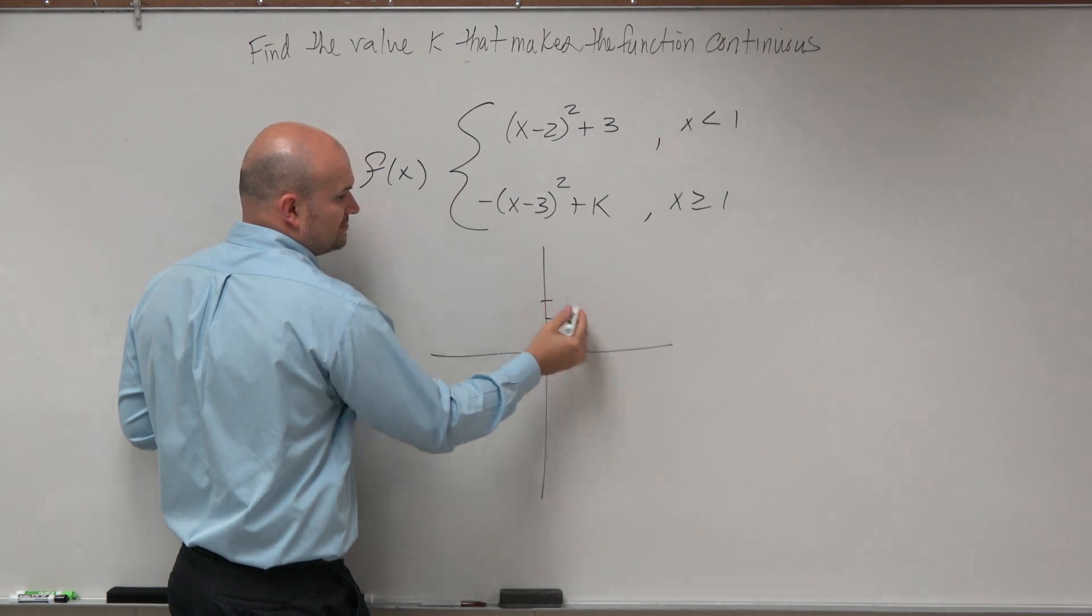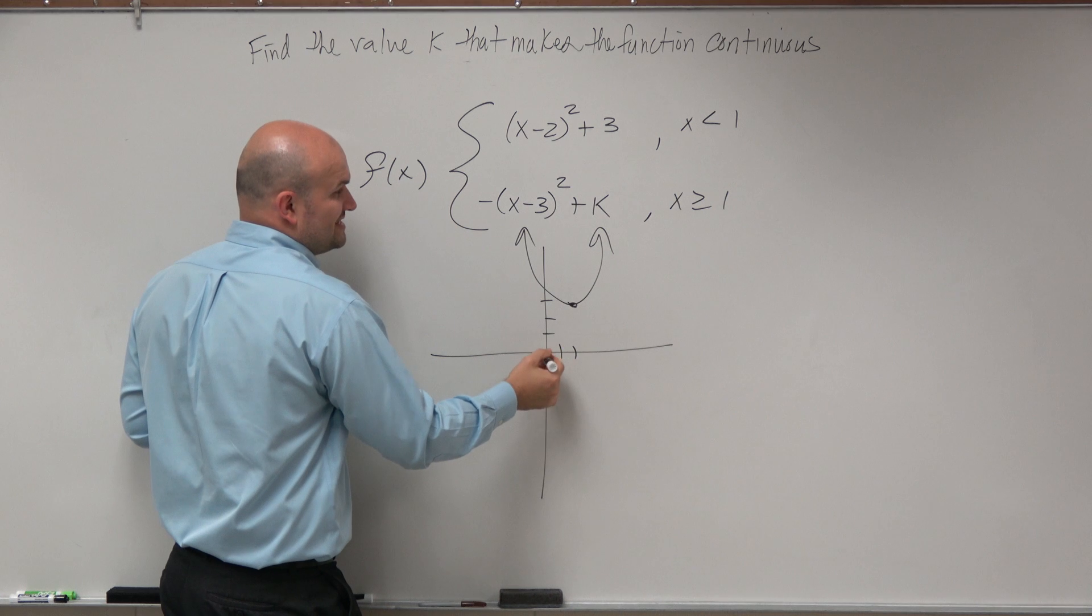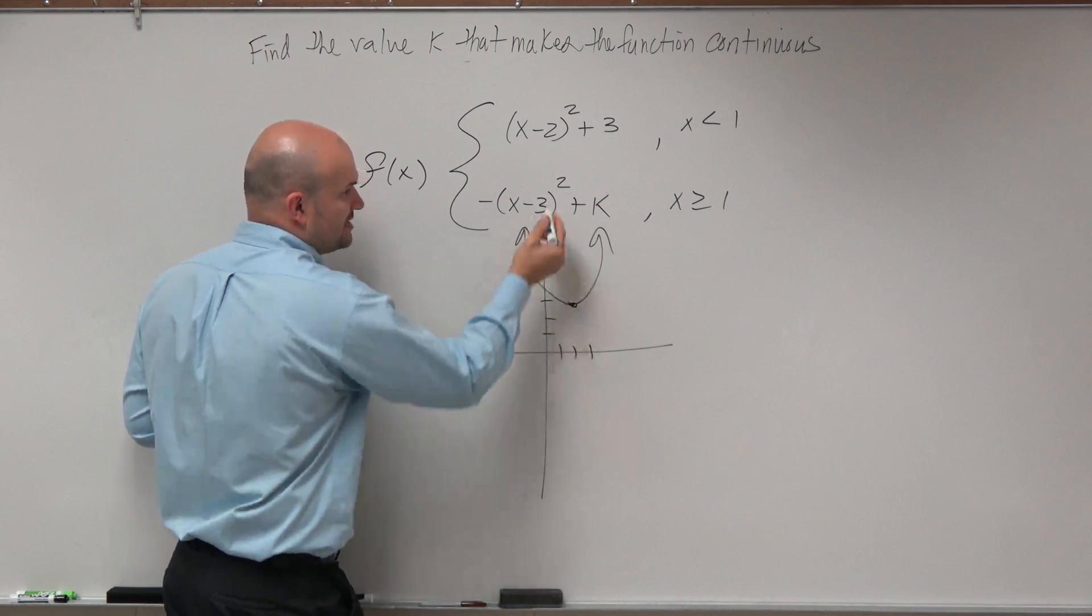You're going right 2, up 3. Graph that. Looks something like this. Here, we're going right 3. It's going to be shifted down.